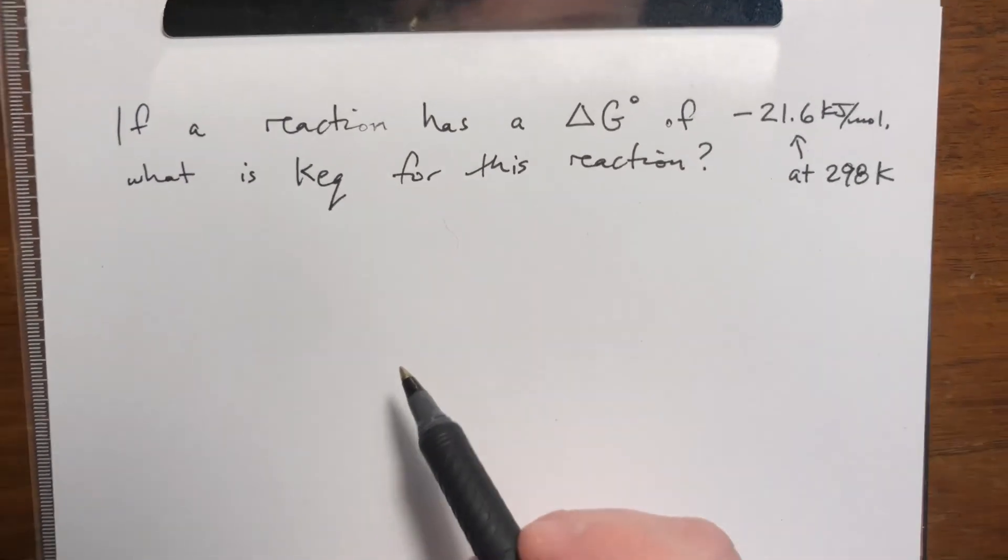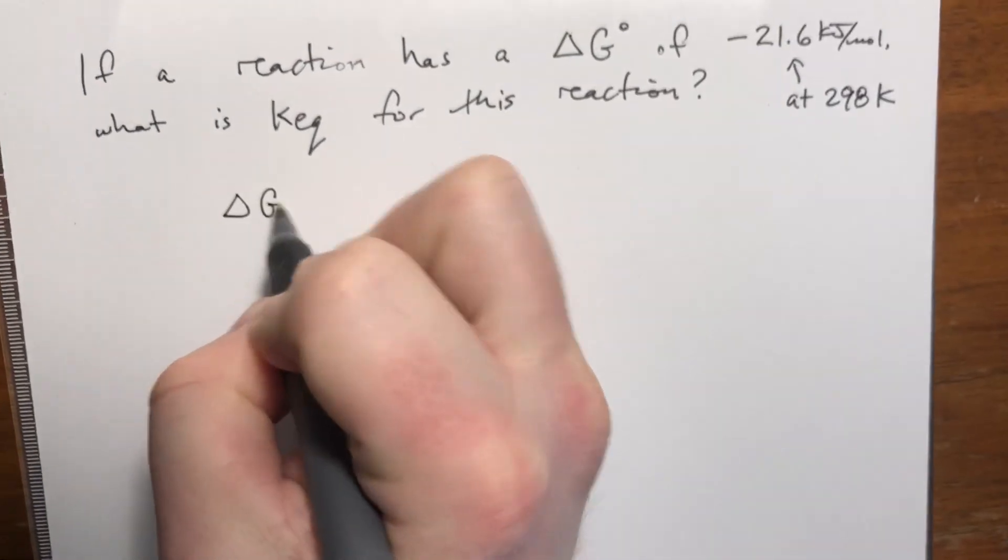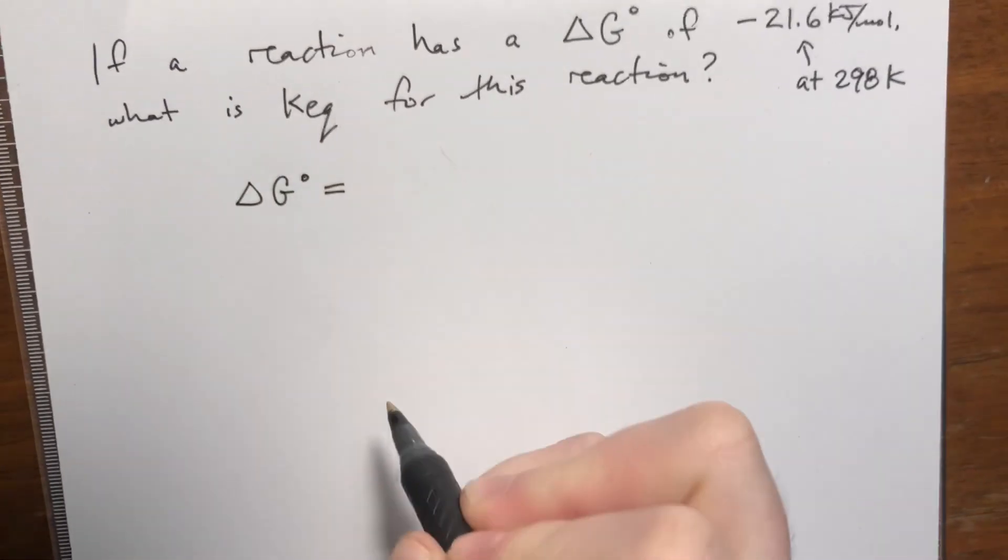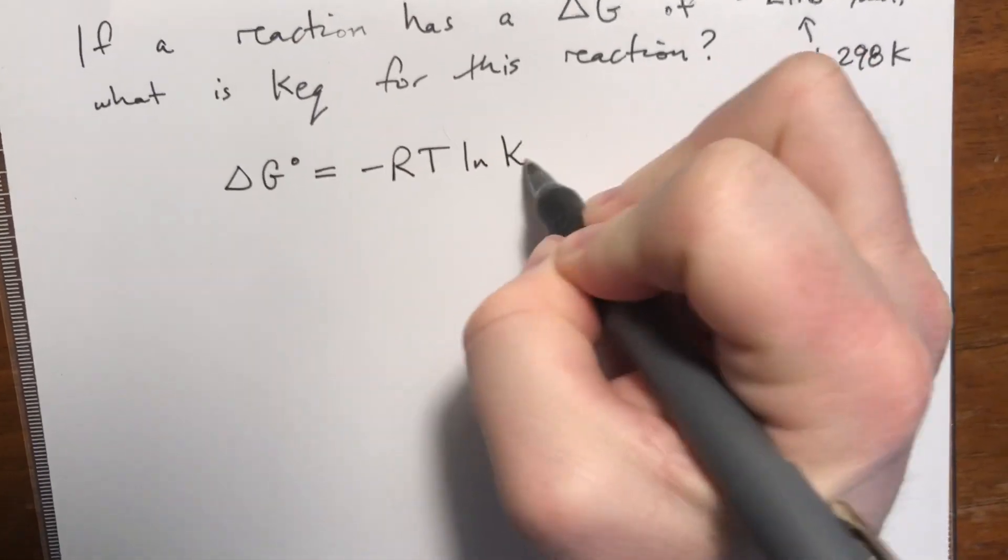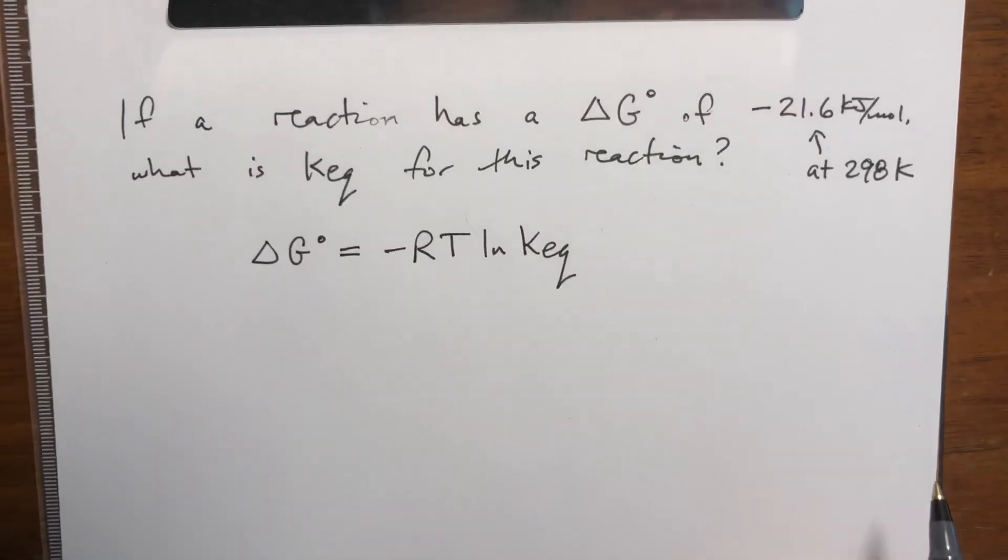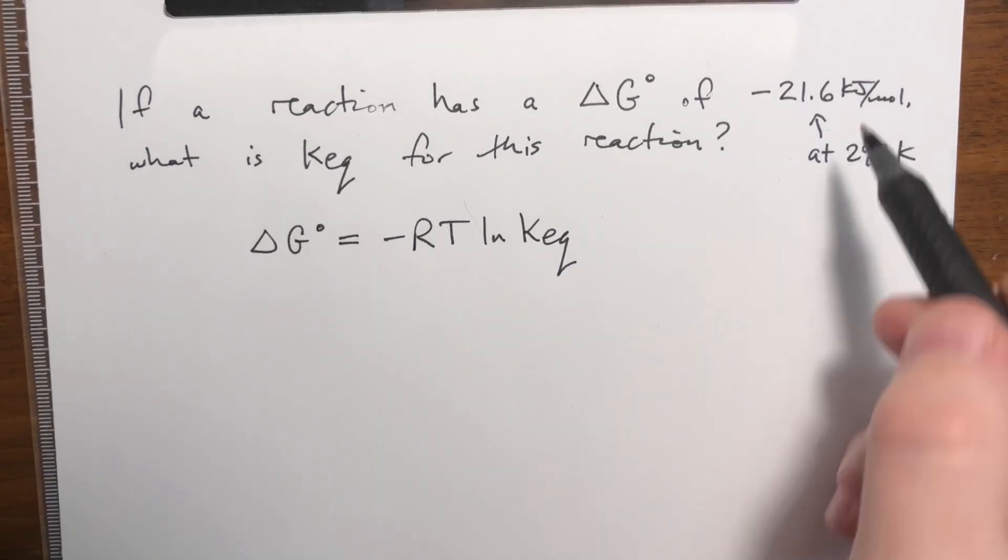So for this stuff it's essentially just plug and chug. The equation is delta G at standard conditions is equal to negative RT times the natural log of Keq. Well delta G we know.